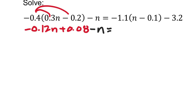There is some distribution on the right with the negative 1.1, which we can do. So negative 1.1 times n or 1n would be negative 1.1n. And then negative 1.1 times negative 0.1, that's a negative and a negative, which makes a positive 0.11 on this. Of course, still minus 3.2.